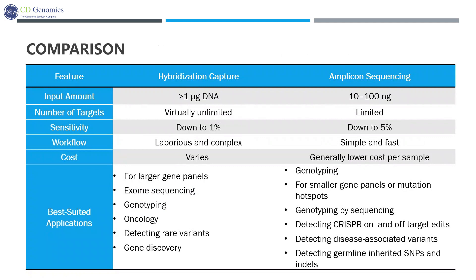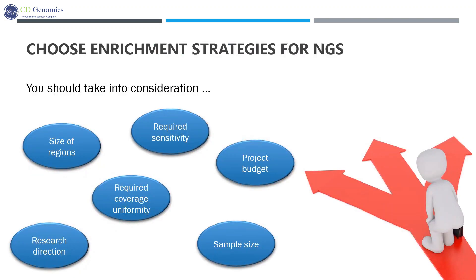Generally speaking, amplicon-based approaches may be preferable for their simplified workflow and smaller amounts of required DNA. However, hybridization-based strategies are less likely to miss mutations and also perform better with respect to sequencing complexity and uniformity of coverage. There are also differences in sample requirements, sensitivity, workflow, cost, and more. The choice of enrichment methods for targeted sequencing assays is an important consideration, and will depend largely on the research direction, sample size, the size of the region to be targeted, the cost of sequencing, and the required coverage uniformity and sensitivity of the assay.